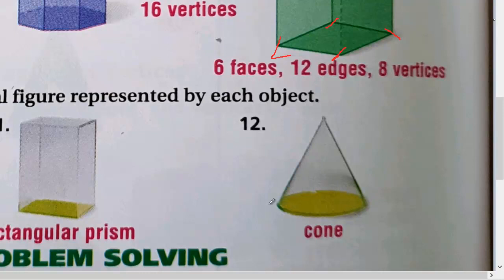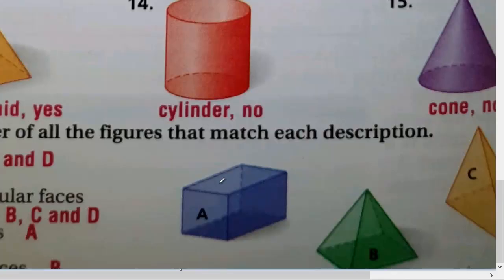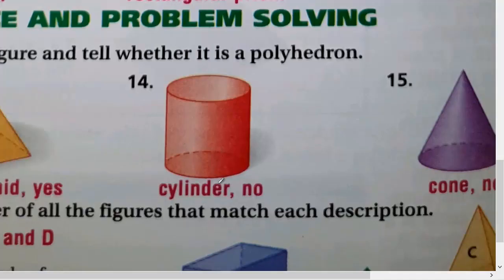Question twelve: we have only one base and that base is a circle, so we call it a cone. Is it a polyhedron? No, because it has curved sides. To summarize: two circle bases means a cylinder; one circle base means a cone.